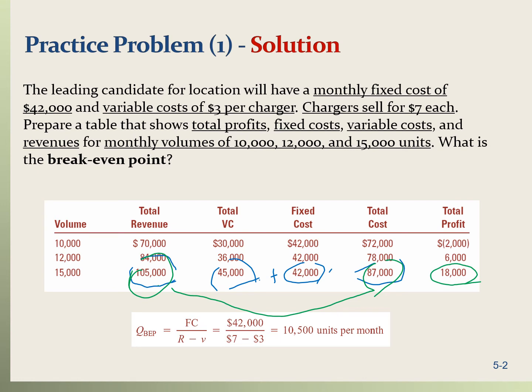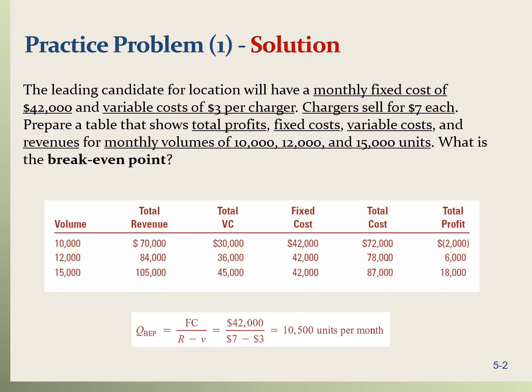Then we compute the break-even point. The break-even point is the fixed cost divided by R minus V. So that's $42,000 divided by (7 minus 3), which is $10,500. So at a quantity of 10,500 units, the profit is zero — we break even.